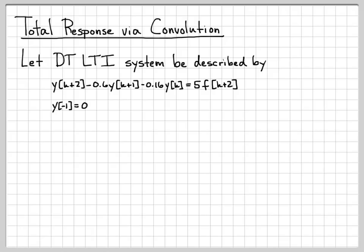It has initial conditions at minus 1, y equals 0. At time minus 2, y equals 25 over 4. And the input is equal to 2^(-k)u[k].